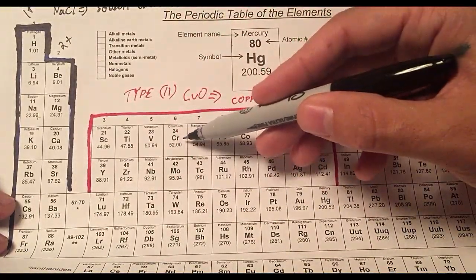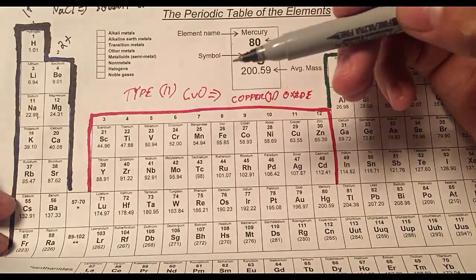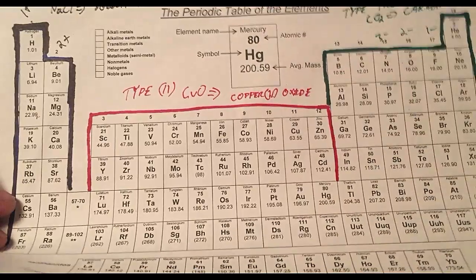There it is, right there. If it's here, we don't know the charge. So I have to use a Roman numeral to represent the charge. Now I have to figure out what the charge is.